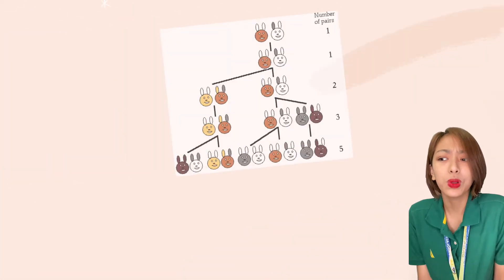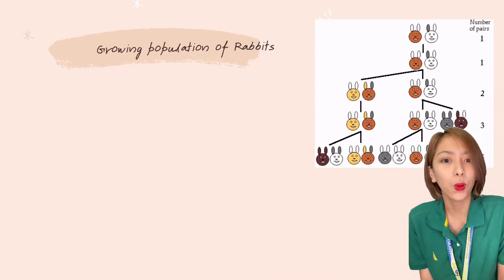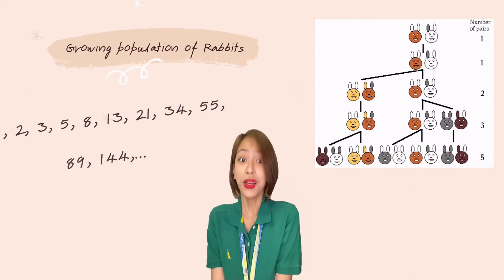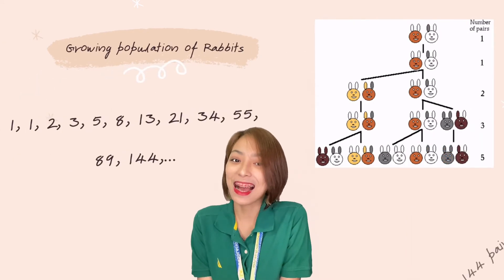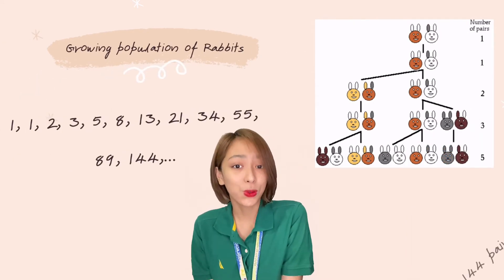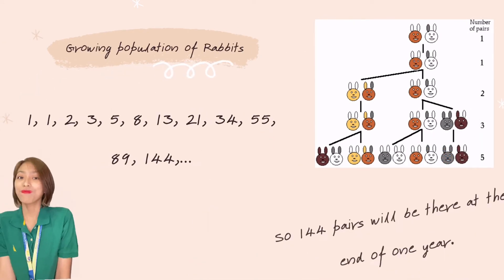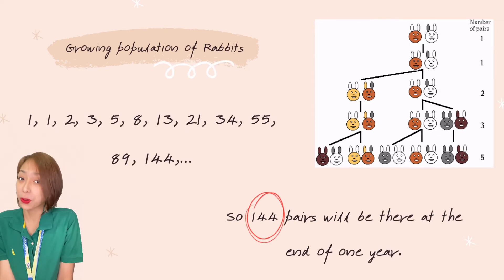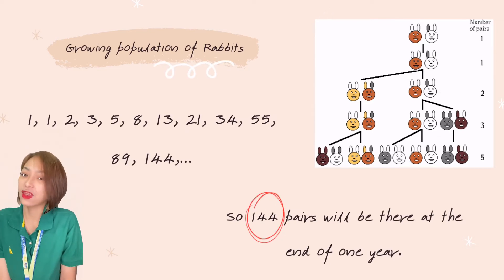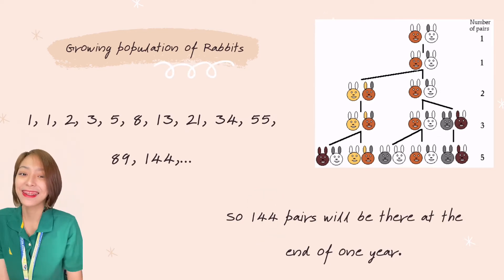So, let's go back to the rabbits. How many pairs will there be in one year? We'll just add the last two terms. 144 pairs will be there at the end of one year.